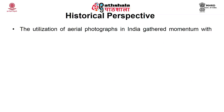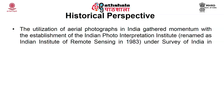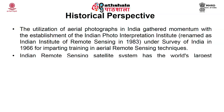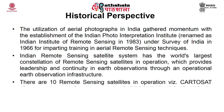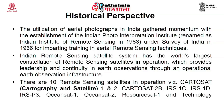The utilization of aerial photographs in India gathered momentum with the establishment of the Indian Photo Interpretation Institute, which was renamed as the Indian Institute of Remote Sensing in 1983 under the Survey of India for imparting training in aerial remote sensing techniques. The Indian remote sensing satellite system has the world's largest constellation of remote sensing satellites in operation, providing leadership and continuity in earth observations. Currently there are almost 10 satellites in operation including Cartosat-1, Cartosat-2, Cartosat-2B, IRS-1C, IRS-1D, P3, OceanSat-1, OceanSat-2, ResourceSat-1, and Technology Experiment Satellite.